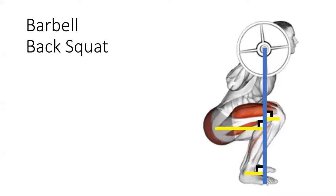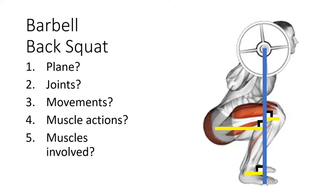We'll start off with the barbell back squat as our first example and go through our five-point checklist to understand this movement. First, which plane of movement — it's a sagittal plane movement because we're looking at it from the side. The movements at the joints involve the hip, the knee, and the ankle joint, performing flexion at the hip, flexion at the knee, and dorsiflexion at the ankle.